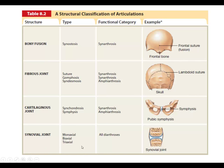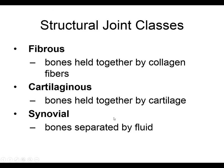Synovial joints can move in a single direction — monoaxial — or biaxial or triaxial. What makes a synovial joint unique is that the gap is filled by synovial fluid, a lubricant. Each articulating bone is covered by a thin layer of cartilage similar to hyaline cartilage. The structural classification: bones separated by cartilage, by fibrous connective tissue, or by synovial fluid.